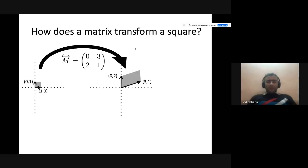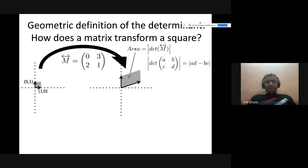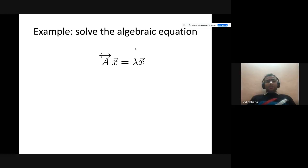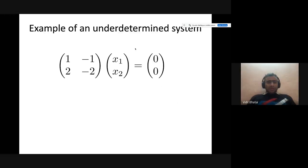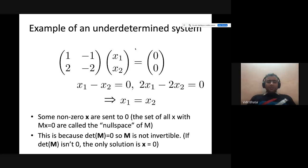How does a matrix transform a square? If you have two vectors — a (0,1) vector pointing toward the y-axis and a (1,0) vector pointing toward the x-axis — and multiply with a matrix, it will scale this square based on that matrix. The area would generally correspond to the determinant of that particular matrix. This can also be used to solve the algebraic equation Ax = λx, which is generally what we do for solving linear regression or linear classification related problems.